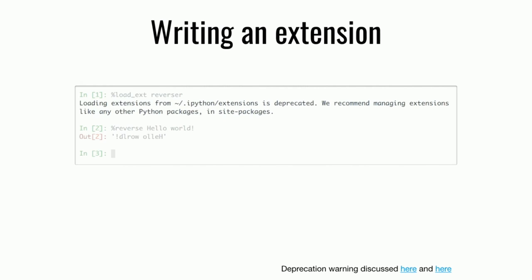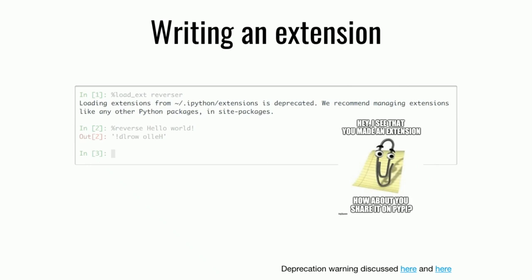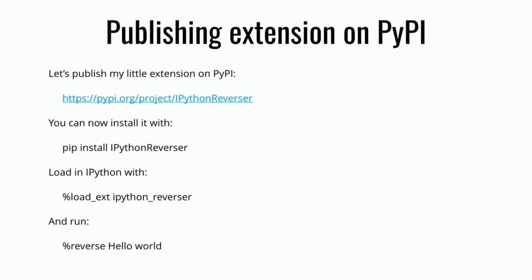Save the function in a file called `reverser.py` inside the extensions directory. Now if you start IPython and load your extension, the `reverse` magic function will be available. You might notice a deprecation warning — it's not really deprecated, it's just IPython's way of suggesting you share it and publish it on PyPI. So we're going to publish it! You can find the package, install it with pip, and then reverse strings with a magic method in IPython. This package contains just the absolute minimum code needed to publish an IPython extension on PyPI, so if you want to publish your own, go check it out.